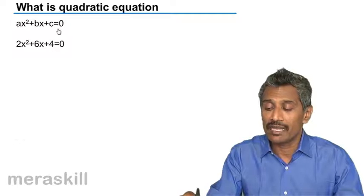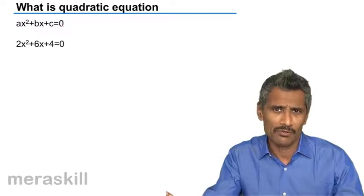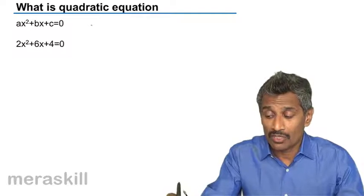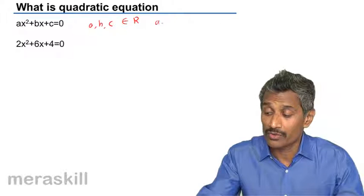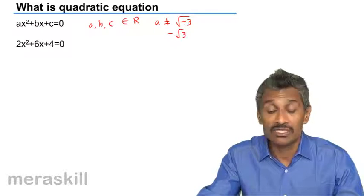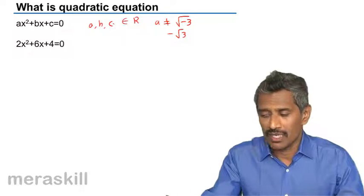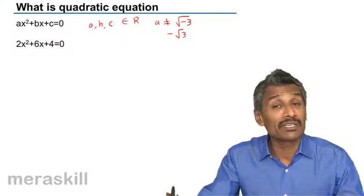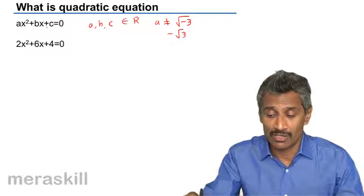As I said, AX squared plus BX plus C equals 0 is the standard form of a quadratic equation. A, B, and C are all real numbers. So A could not be a number like root of minus 3 — it can be minus root 3, but not root of minus 3. B can be any real number; it could be rational or irrational, but it is a real number.